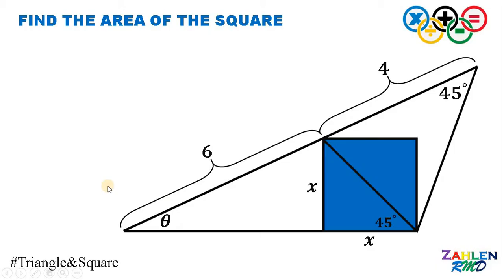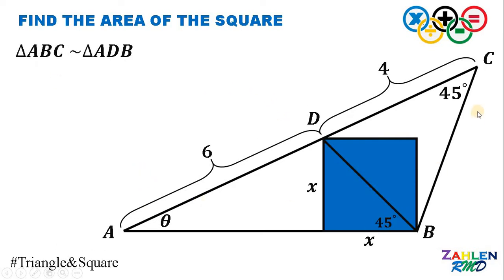Let's name some vertices in this figure. Let this vertex be A, this is B, this is C, and this is D. In this figure, we have similar triangles — namely, triangle ABC is similar to triangle ADB. The reason is two angles of those triangles have a measure of theta and the other one is 45 degrees. Therefore, by the AA similarity theorem, triangle ABC is similar to triangle ADB.